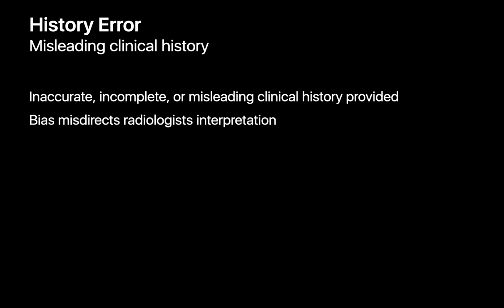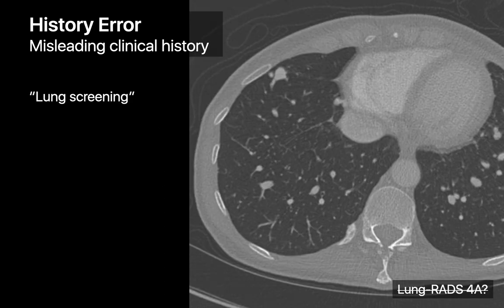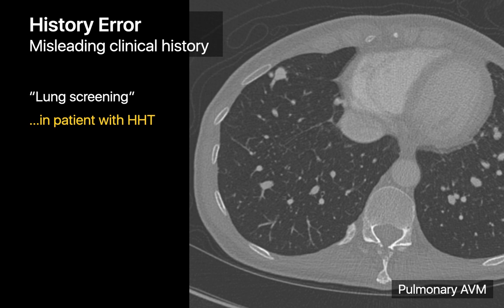History errors occur when the clinical history provided for a study is incomplete, inaccurate, or misleading. Like in this case, for which the provided reason for the study was lung screening, but the referring provider was actually asking us to screen for pulmonary AVMs, not lung cancer. Fortunately, this was caught during CT protocoling before the scan was performed.